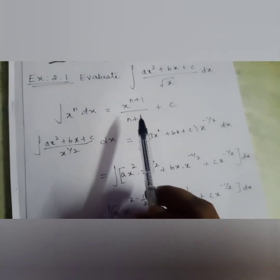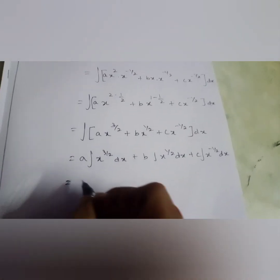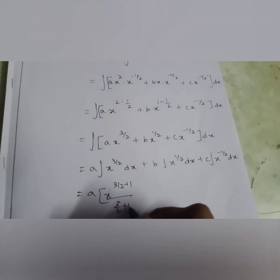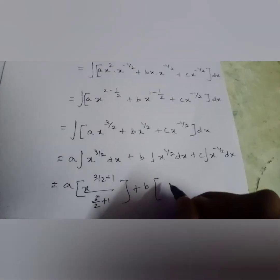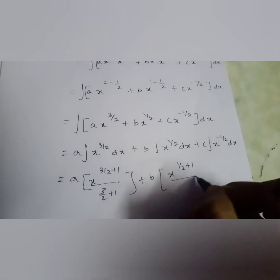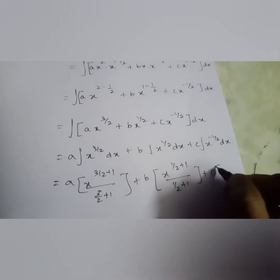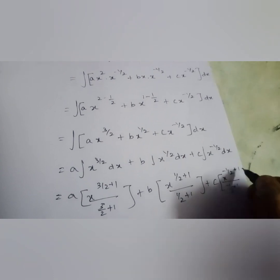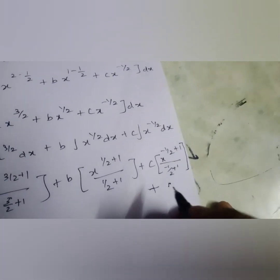Now applying the formula ∫x^n dx = x^(n+1)/(n+1) + c for each term individually, this becomes a · x^(5/2)/(5/2) + b · x^(3/2)/(3/2) + c · x^(1/2)/(1/2) + k. After integrating we must mention the constant. Since we already have a variable c in the expression, we use k for the integration constant.